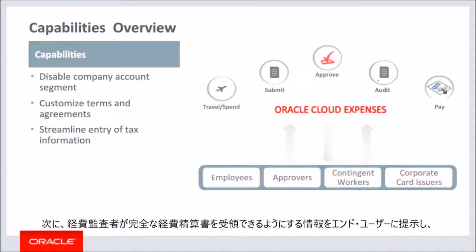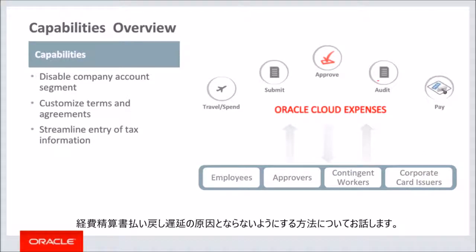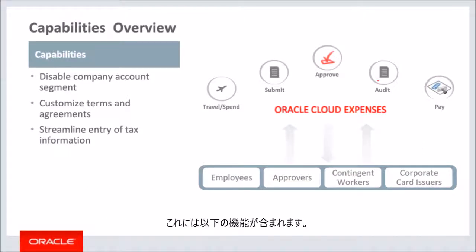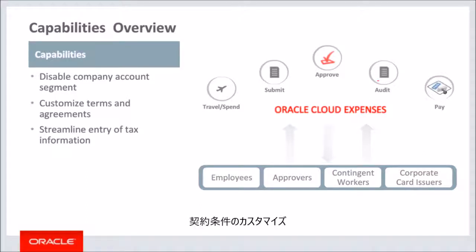Then we will discuss ways in which end users are presented with information that ensures that expense auditors receive a complete expense report with little cause to delay reimbursement. These capabilities include disable company account segment, customize terms and agreements, and streamline entry of tax information.